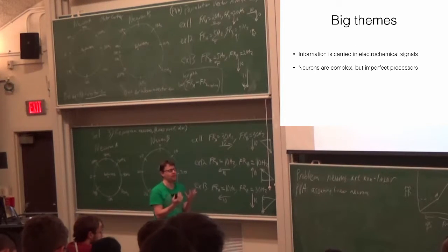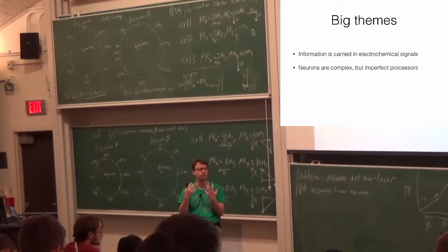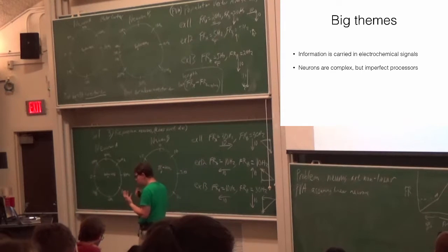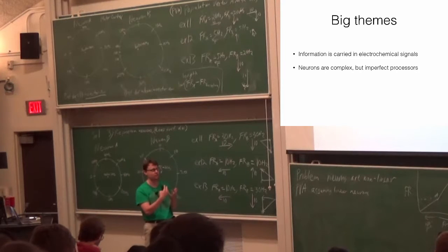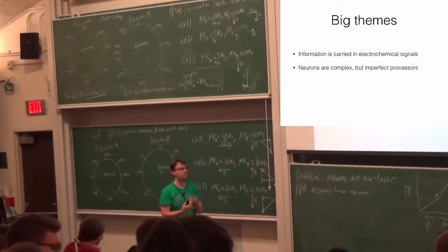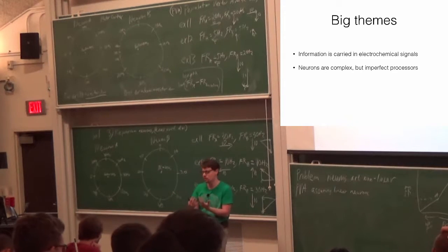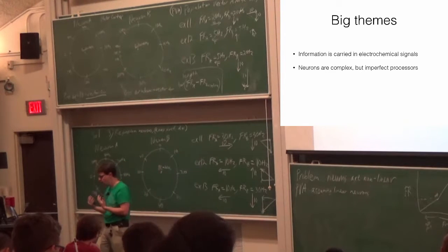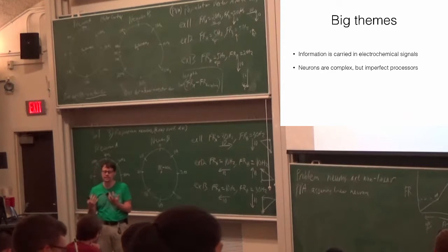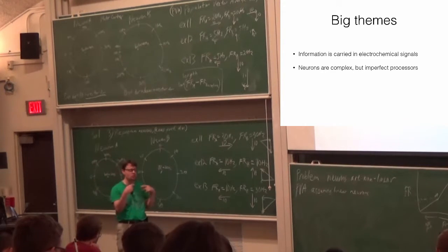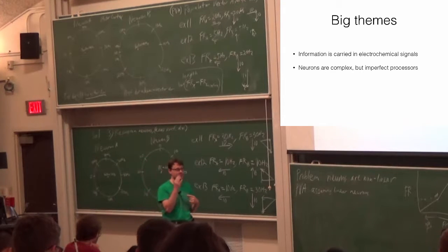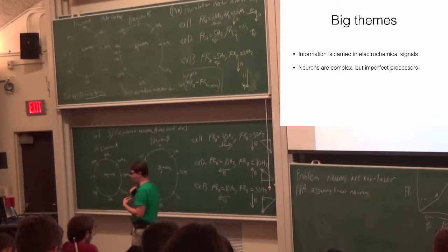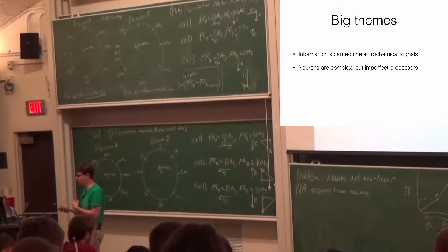We've also talked about a few cases in this class where we've seen that neurons are imperfect processors in a lot of different ways. One example is that neurons in the sensory system seem to encode incoming information very precisely with the timing of their action potentials. But the brain actually seems unable to take advantage of a lot of that information present in those timings — it's almost like we can read the animal's sensory inputs better than its own brain can when we record every single action potential. So the brain works, but not necessarily as ideally as we might hope.